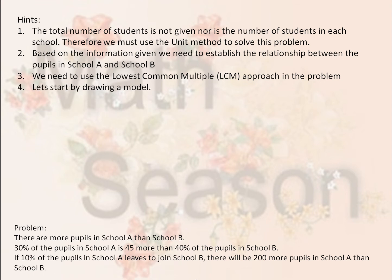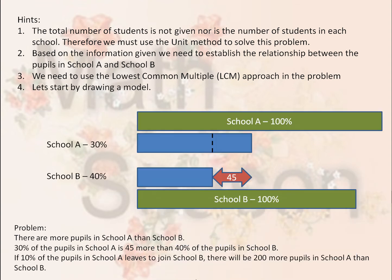Let's start by drawing a model. The top bar, the green color bar, is for School A, which represents 100% of the pupils. The bottom green bar represents School B, which represents 100% of students in School B. If you note, the bar for School A is larger than the one for School B.